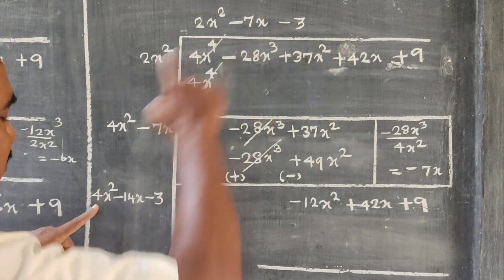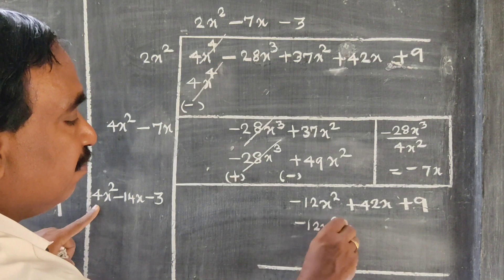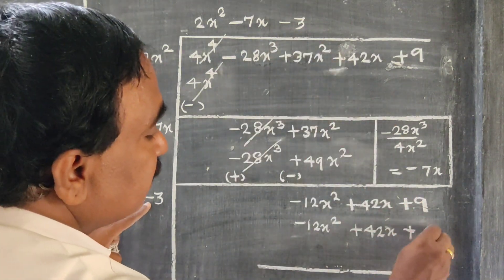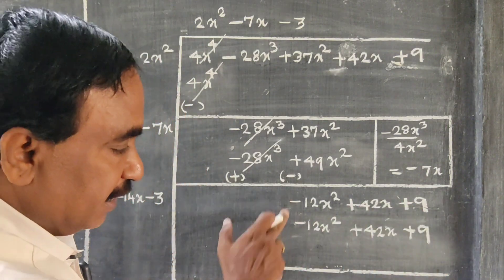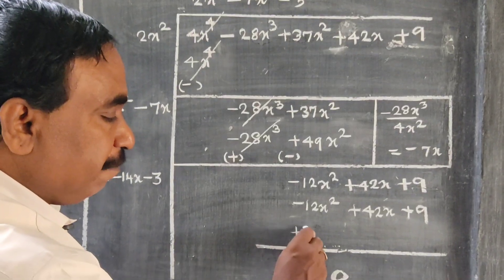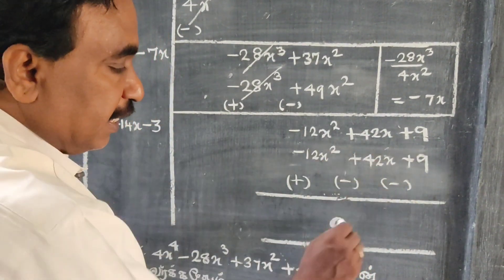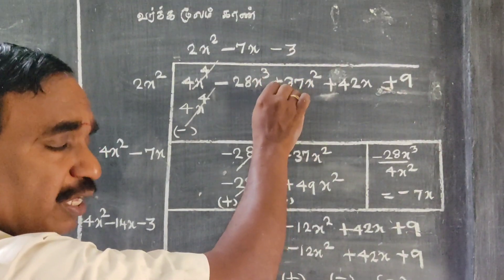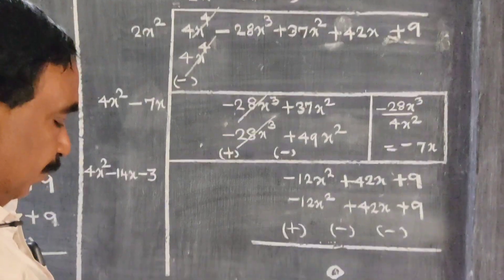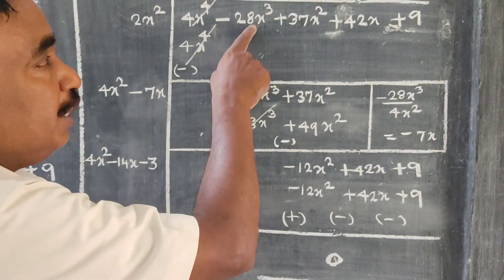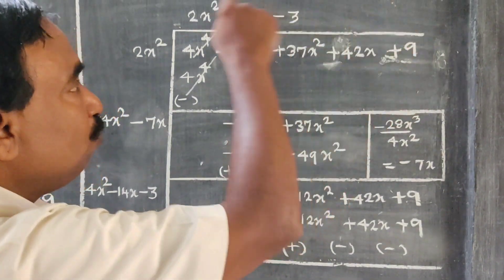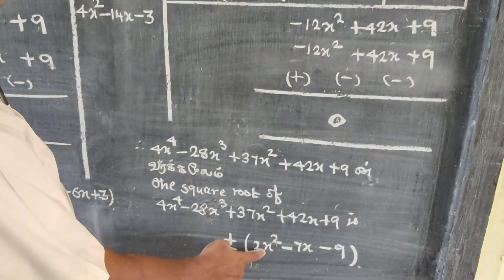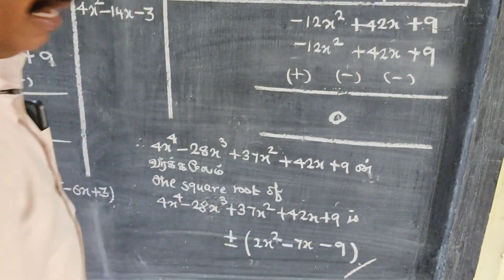Minus 3 into 4 gives minus 12x². Minus of minus plus 3 into 14 gives 42x, and minus of minus plus 9 is 9. Subtracting, the remainder is equal to 0. With remainder 0, the square root is equal to 2x² minus 7x minus 3, or plus or minus (2x² minus 7x minus 3).